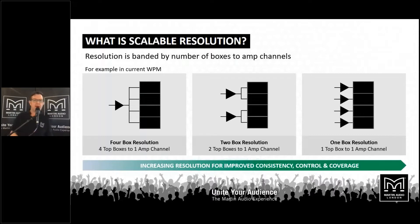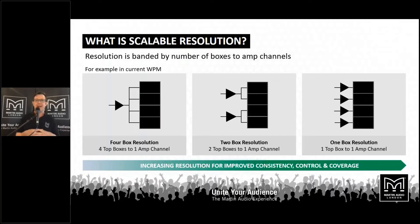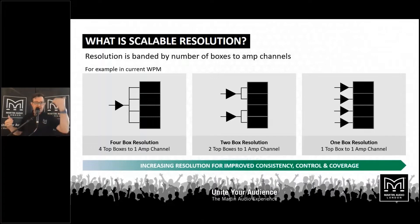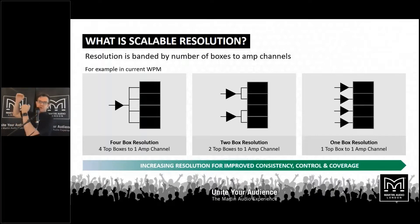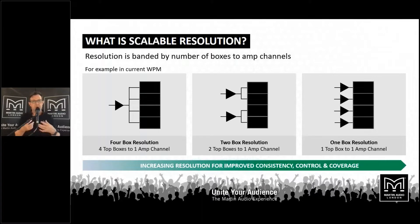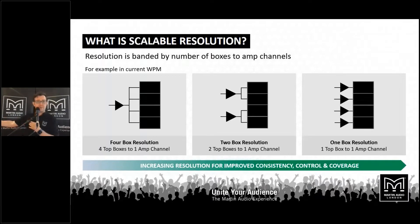A simple way of thinking about this: with a 16-deep hang of WPM in a theatre with 16 rows of socially-distanced seating — at four-box resolution, I'm processing four rows of seats as one block. At the other extreme, at one-box resolution, I would be processing each cabinet individually. Each cabinet would point at a row of seats and Display would have the freedom to correct the sound to be the same in every single row of seats in the house.